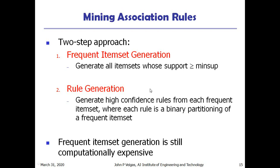There are two step approaches. First is frequent item set generation: generate all item sets whose support is greater than or equal to minimum support. The second step is rule generation: generate the high confidence rules from each frequent item set, that is rules having confidence greater than the minimum confidence level. However, frequent item set generation is still a computationally expensive task.